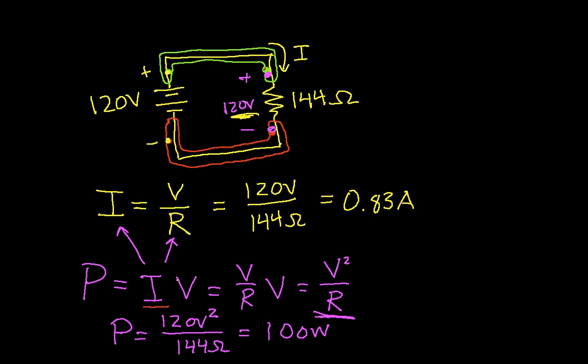I can also find power in terms of the current through the resistor. And I do that by starting with this expression. And rather than substituting in V over R for I, I can substitute in for V, I times R.